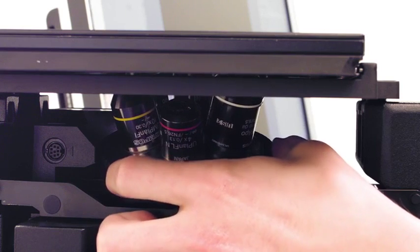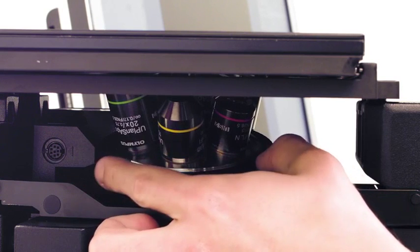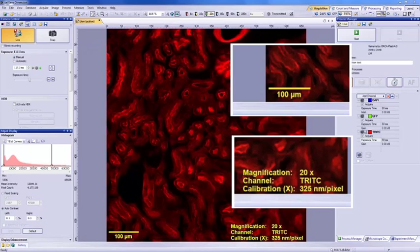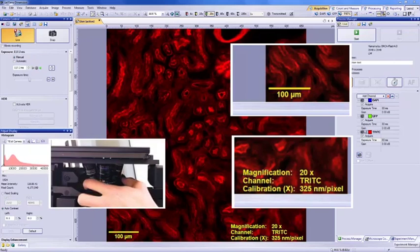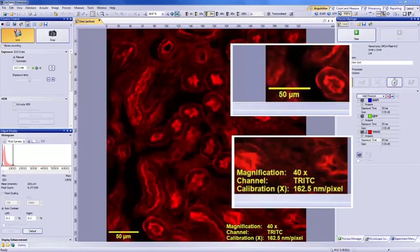The IX-73 coded nose piece ensures the researcher never has to question the size of features in their image again. Changing from the 10x to the 20x objective lens here updates the scale bar. In the image metadata, the pixel size is automatically updated for accurate quantitation of sample morphology.